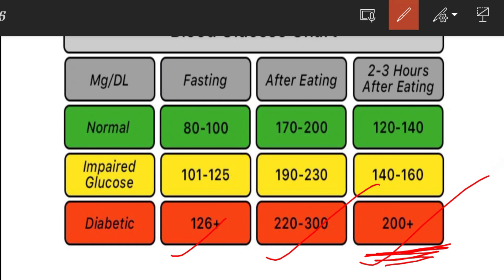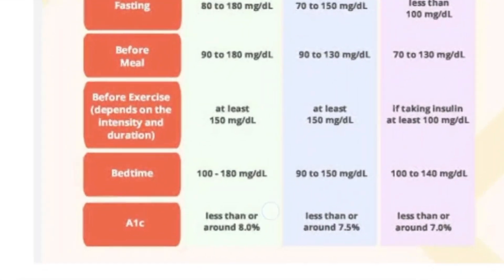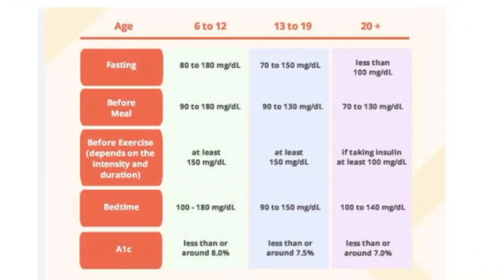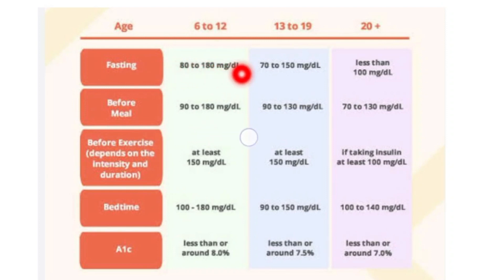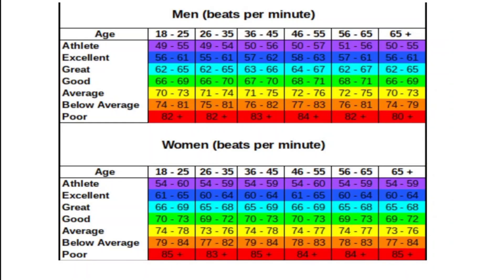After fasting, if you have 60 mg/dL, that can also indicate an abnormal state. The blood sugar range also varies according to age group — for example, the age group range is given in the chart.